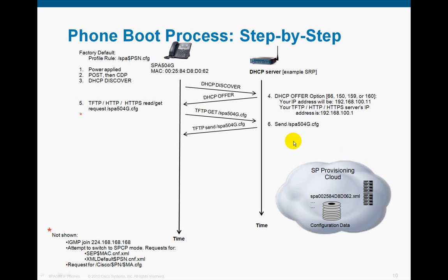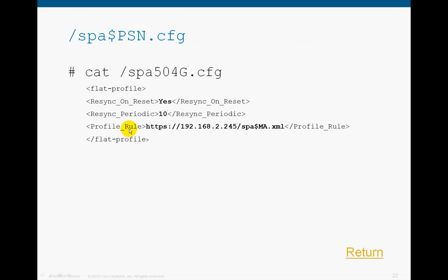Next step: the DHCP server sends the SPAR504G.CFG file to the phone as requested. The phone receives it in its entirety and immediately loads it. Looking at the SPAR504G.CFG, it's a very simple file — just a flat profile header and trailer. It says resync on reset: yes, resync periodic: 10 seconds. Then the profile rule — in this case I'm giving it a protocol and a path, or I could use a server name to resolve with DNS. I'm telling it to look for the prefix SPAR and then the phone's MAC address.xml.